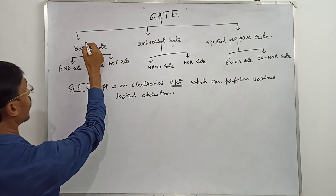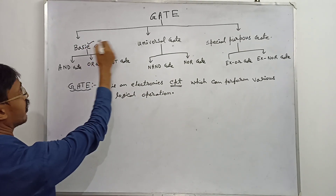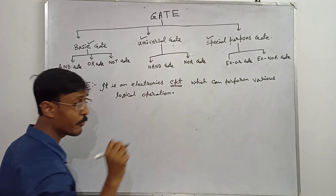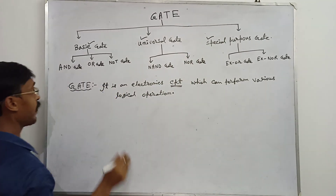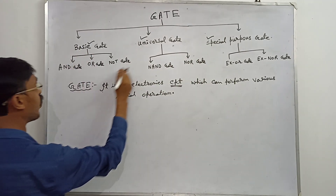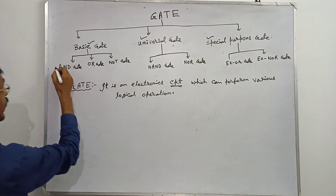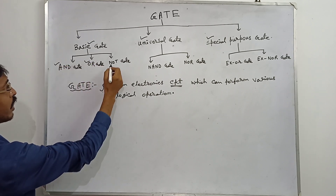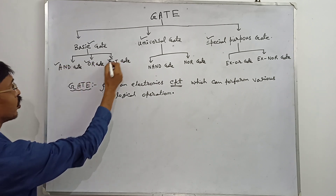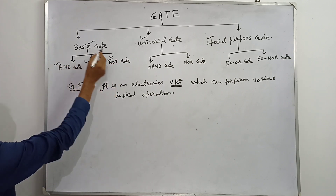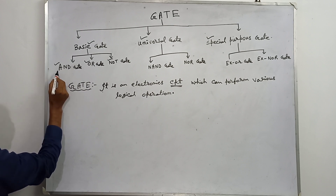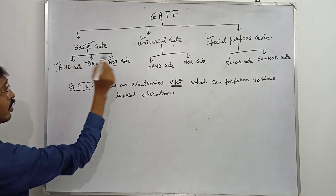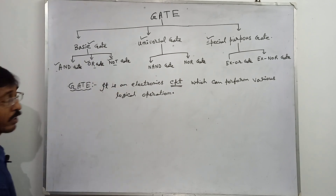First, basic gate; universal gate; special type of gate. The basic gate is further classified into three: AND gate, OR gate, and NOT gate. Basic gate has three types — AND gate, OR gate, and NOT gate.